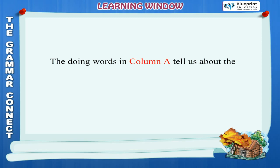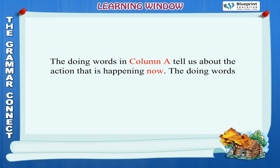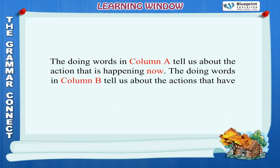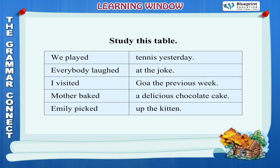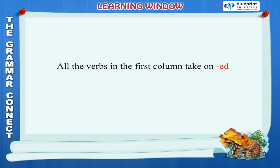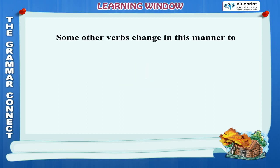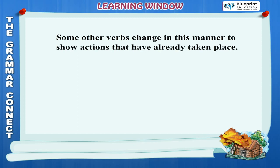The doing words in column A tell us about the action that is happening now. The doing words in column B tell us about the actions that have already taken place. Doing words tell us about actions happening now or that happened in the past. Examples: We played tennis yesterday. Everybody laughed at the joke. I visited Goa the previous week. Mother baked a delicious chocolate cake. Emily picked up the kitten. All the verbs take on ED to show that the action has already taken place.